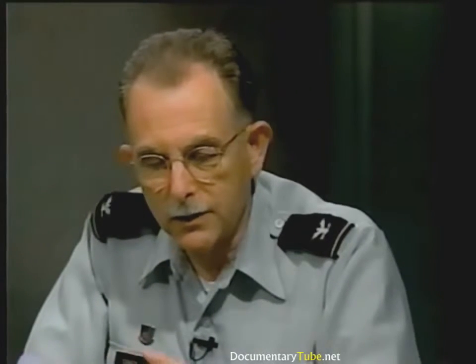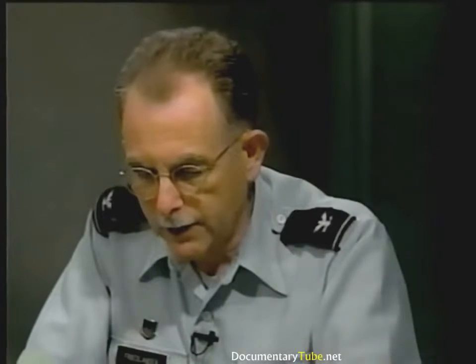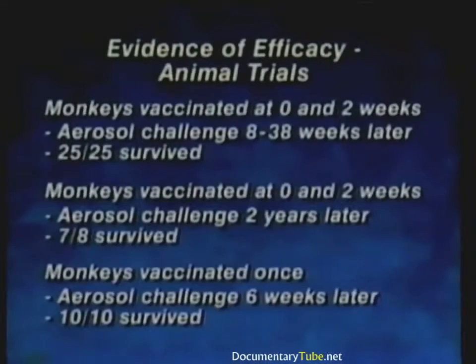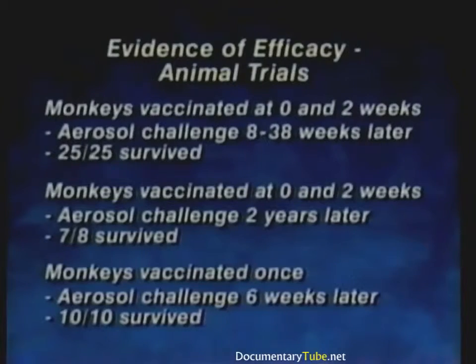In non-human primate studies involving rhesus monkeys, 25 monkeys receiving two vaccine doses all survived challenge from two to nine months post-vaccination; seven of eight survived at two years. In an additional study, all ten monkeys receiving a single dose survived. Overall, 42 of 43 monkeys survived — demonstrating that the vaccine is highly effective against inhalational anthrax in the best available animal model.